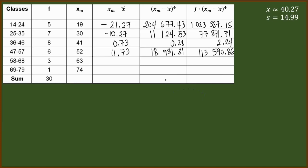Next, we have 63 minus 40.27. We have here 22.73. Then, getting the fourth power of that, we have 266,930.22. Times 3, we have 800,790.66.